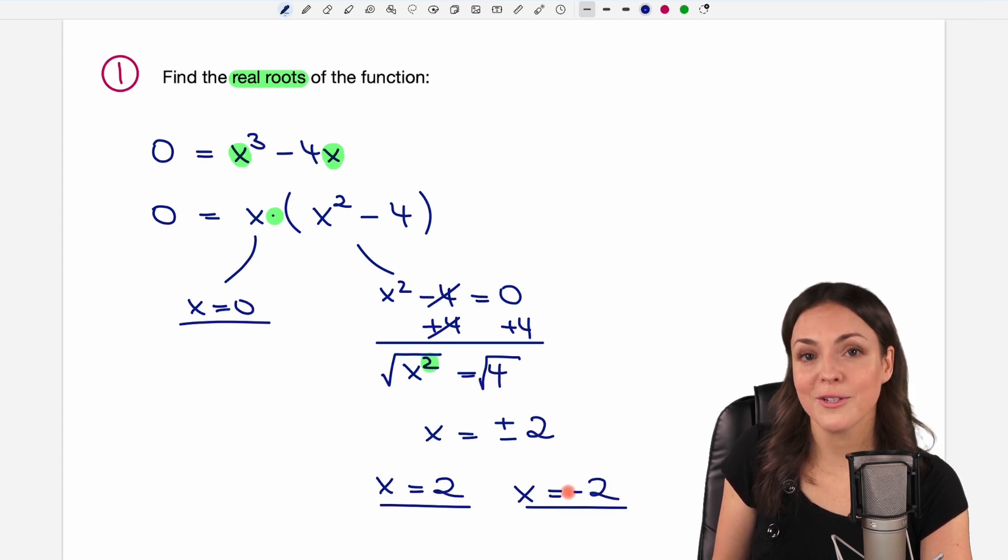And so we have two results, plus two and negative two. And so we found three roots: zero, two, and negative two in our first example.